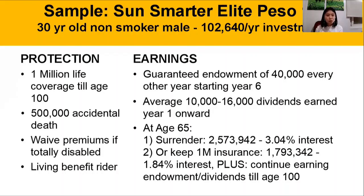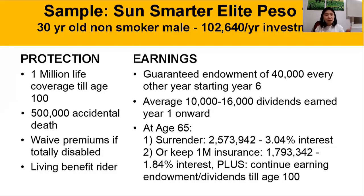The second option, which most people avail of, is to just keep the ₱1 million insurance — to keep the plan intact and just get the earnings part. By doing that, you can get ₱1.79 million in funds, which is roughly translated to almost 2% interest — still higher than the bank. On top of that, the beauty there is the plan still continues. You still have ₱1 million insurance for estate planning purposes or for your family, and you get to continue earning endowments and dividends until age 100.